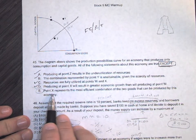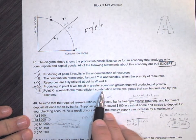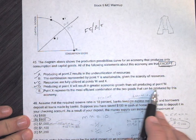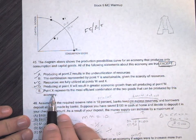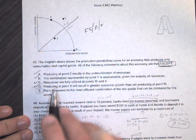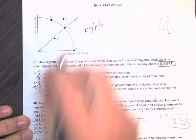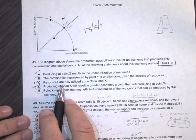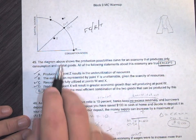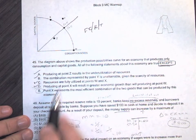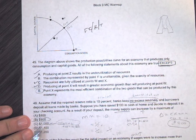Point X is the most efficient combination of the two goods that can be produced by this economy. This is not the most efficient point - we get half of each at the 50-50 split, but X is over by capital, and that's not true. So E is the correct answer.